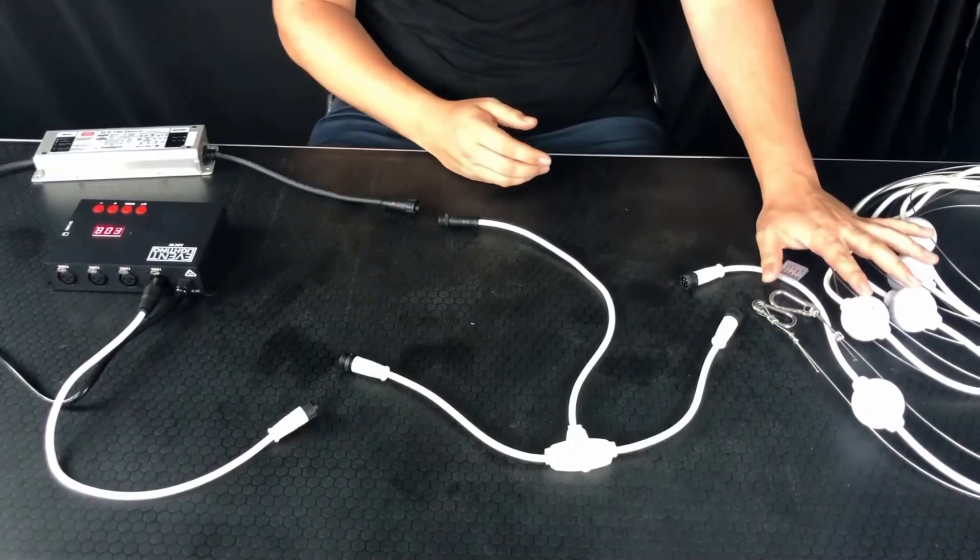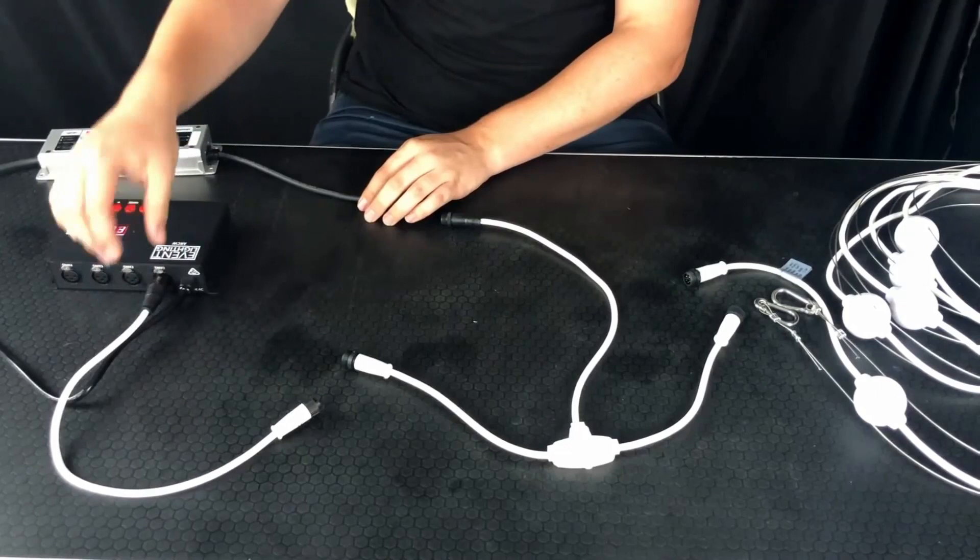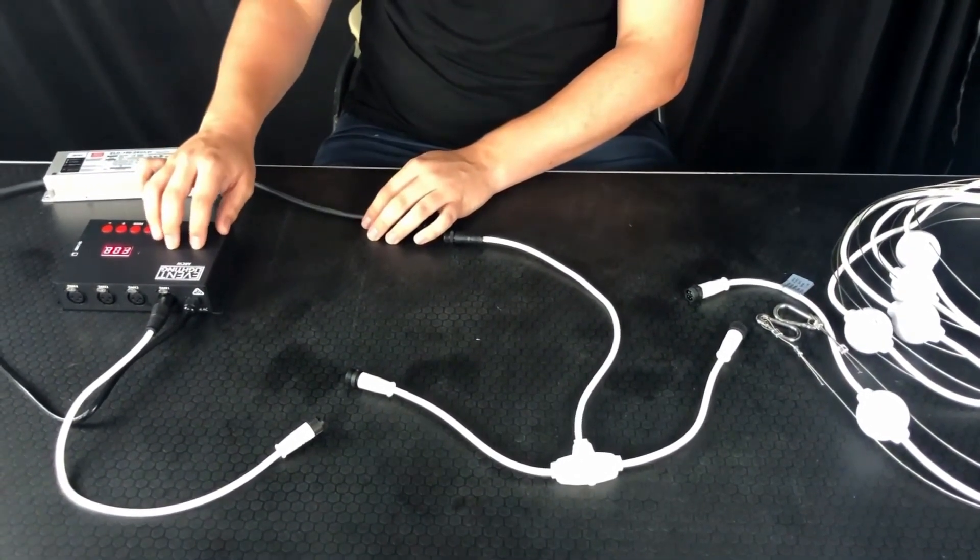First things first, you'll see on the table I've got a string of PixBalls, a T-cable, a DMX injector and the ArcW Rider Programmer which comes loaded with an SD card with a few presets on there.